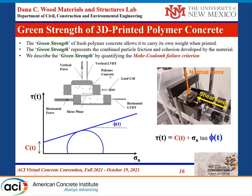We've done experiments to determine the factors for the green strength of the 3D printed concrete. This green strength is described by Mohr-Coulomb failure criteria. We are doing shear strength testing between two layers of polymer concrete, applying normal stress versus shear force, and evaluating the Mohr-Coulomb criteria as a function of time. This is fit to a time-dependent finite element model so that as time passes, mechanical properties including cohesion and friction angle change with time to represent the different layers.